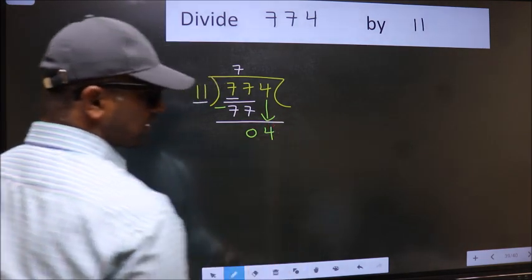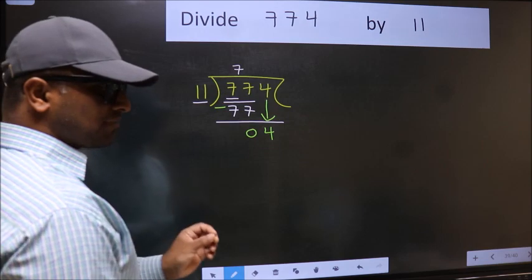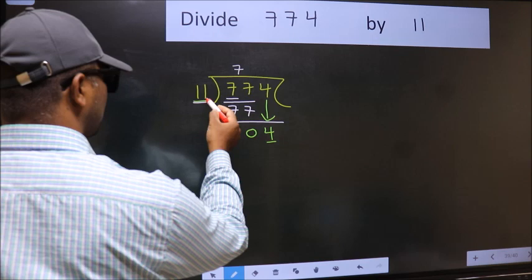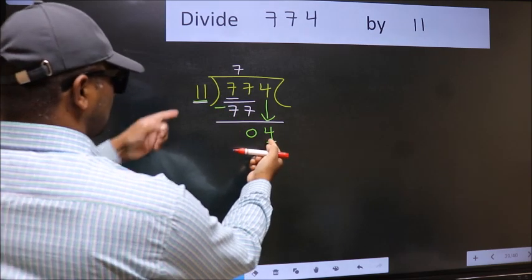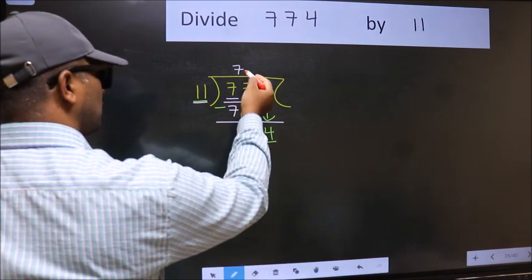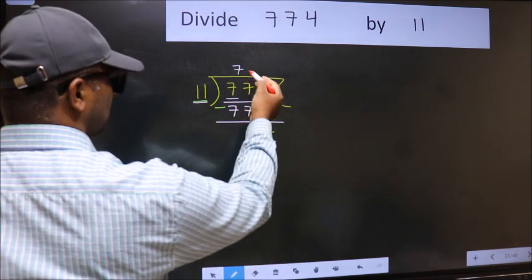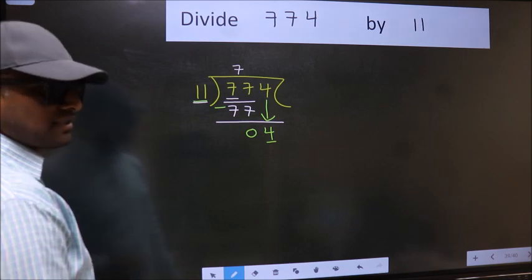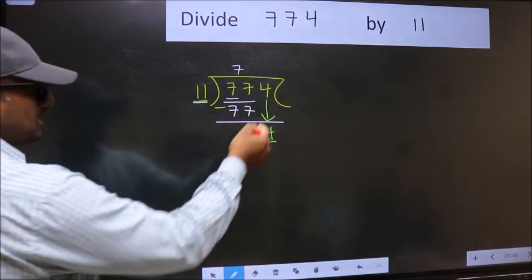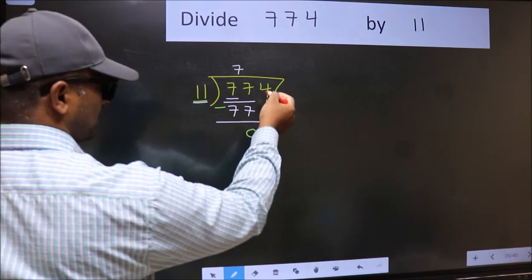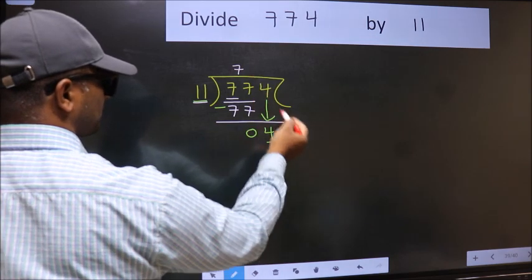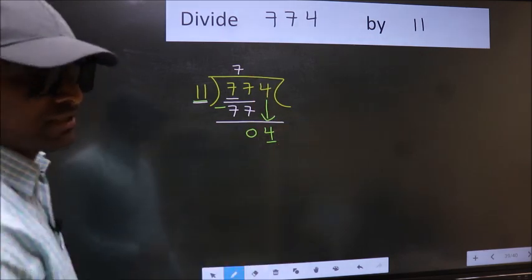After this step, the mistake happens. Here we have 4, and here 11. 4 is smaller than 11. So what many do is they directly put dot, take 0. Which is wrong. Why is it wrong? Because just now you brought this number down, and in the same step you want to put dot, take 0. Which is wrong.